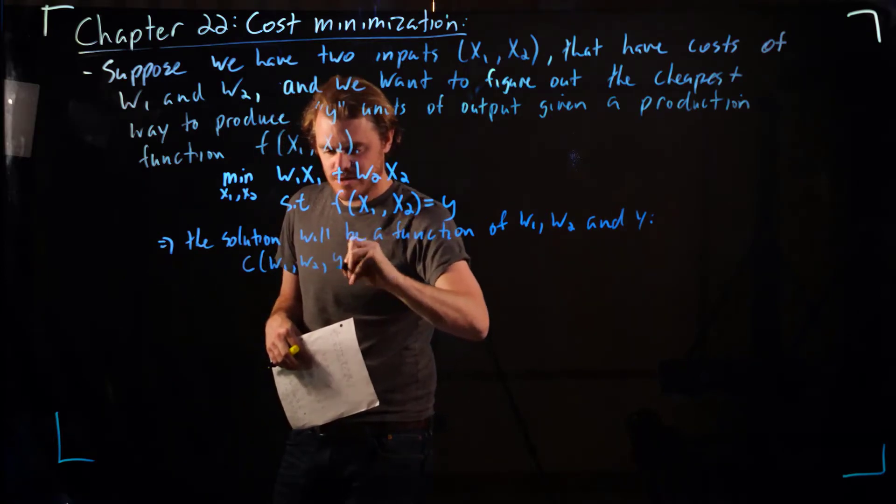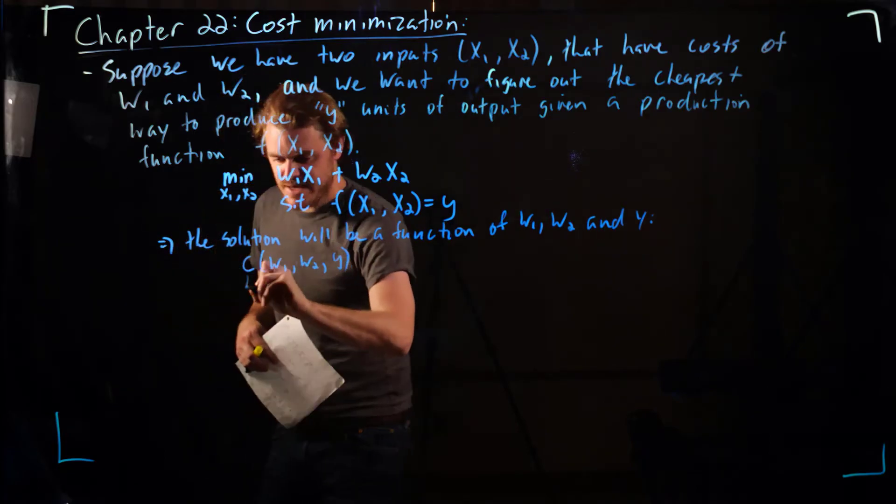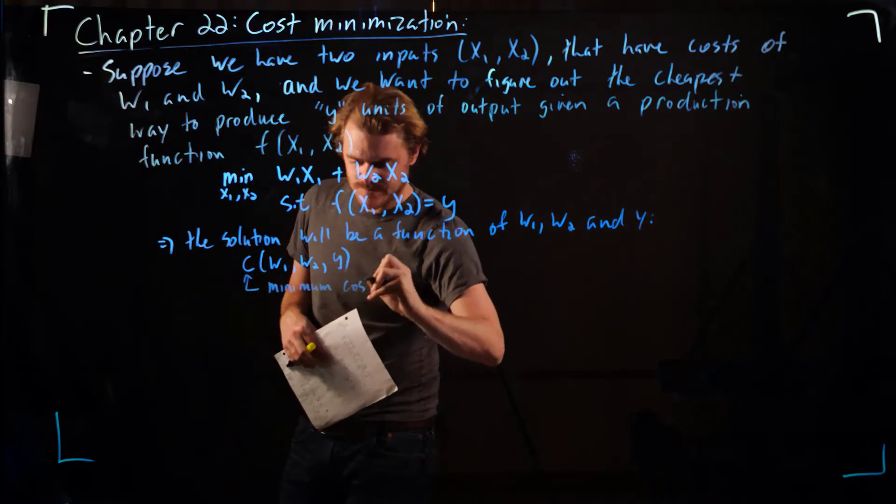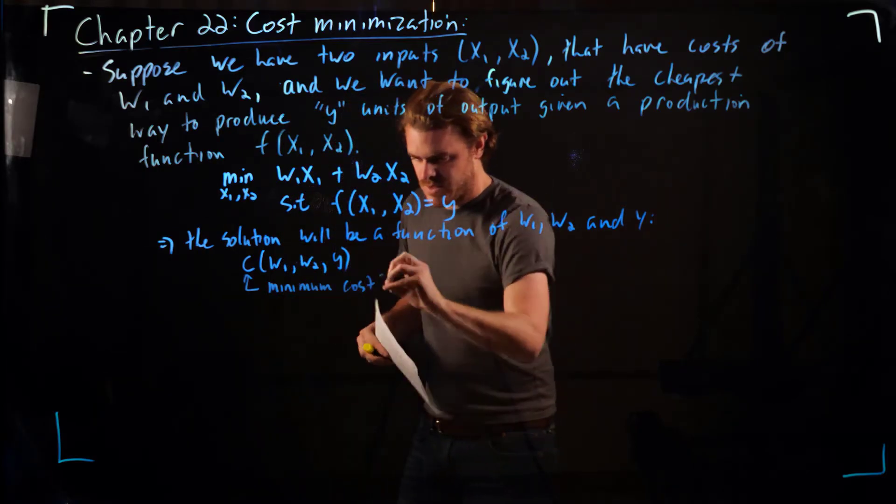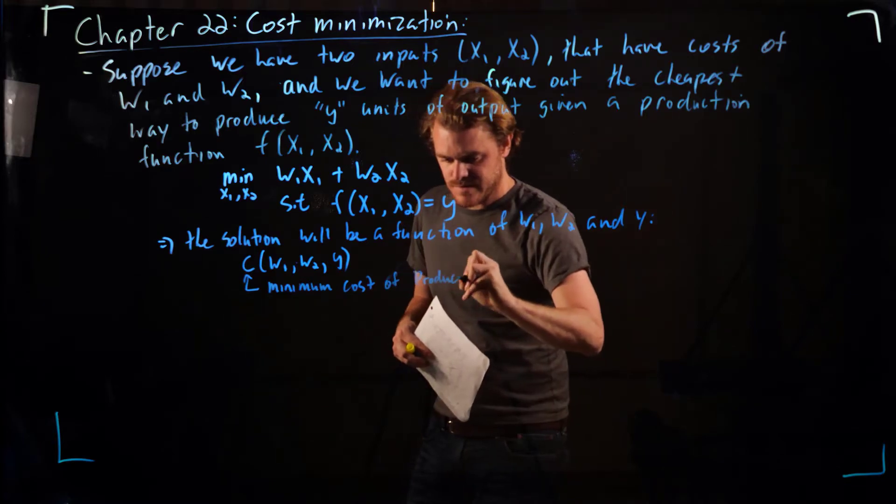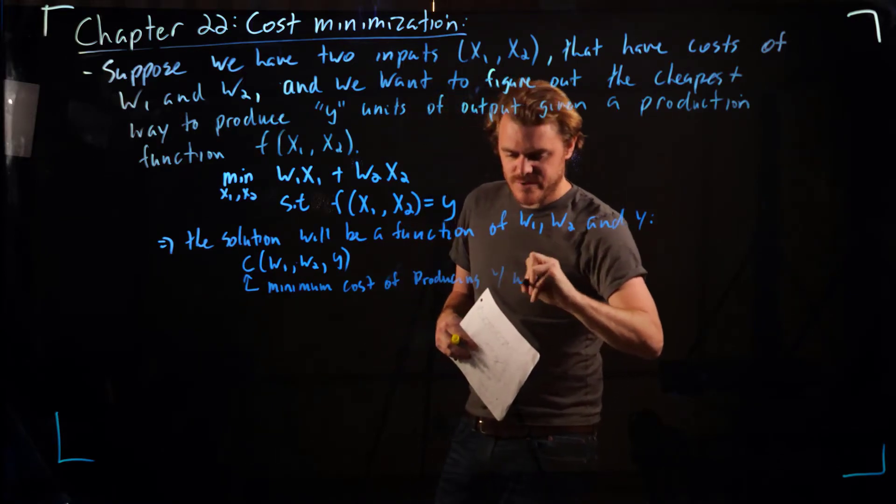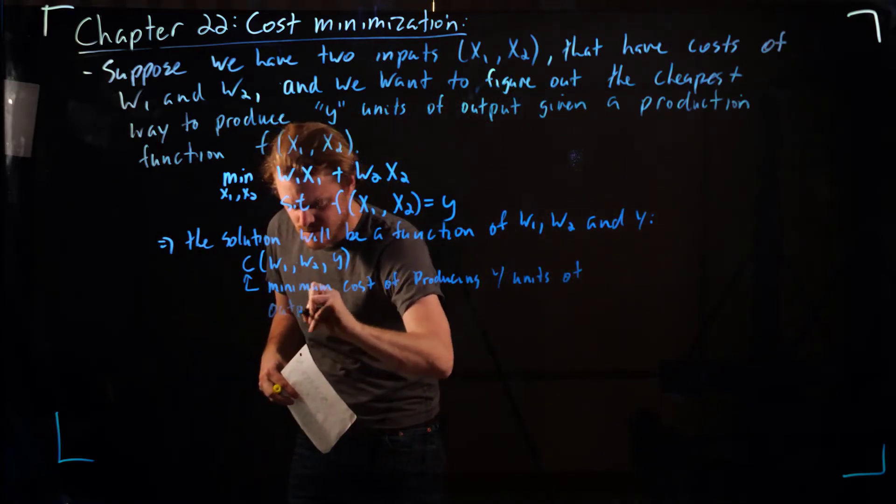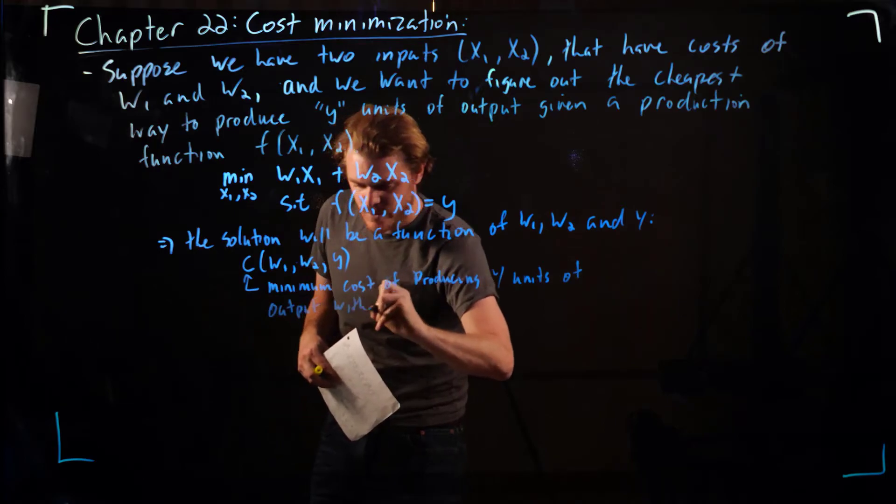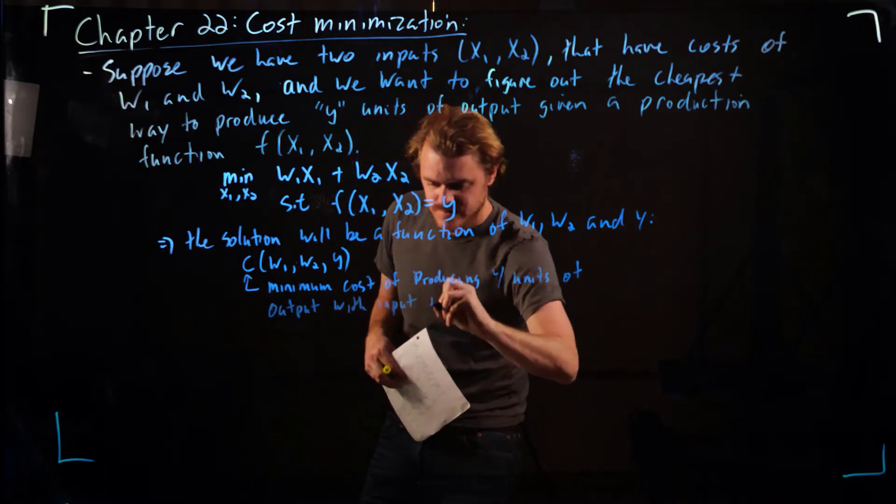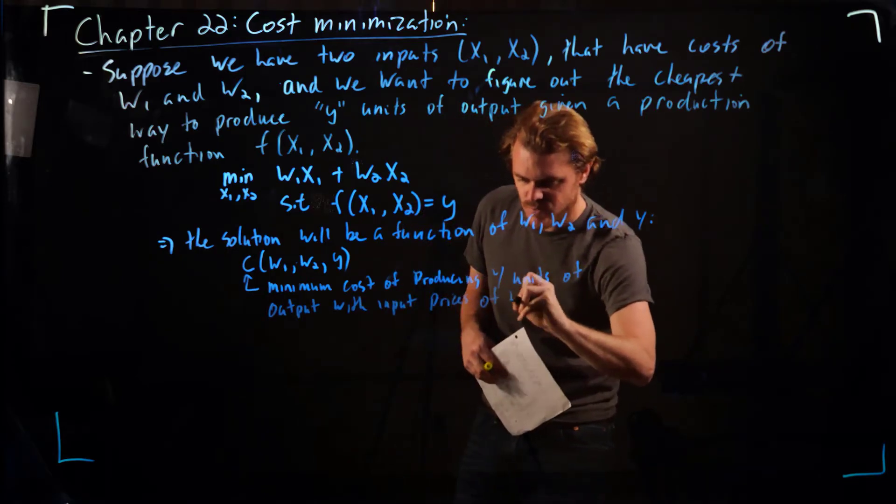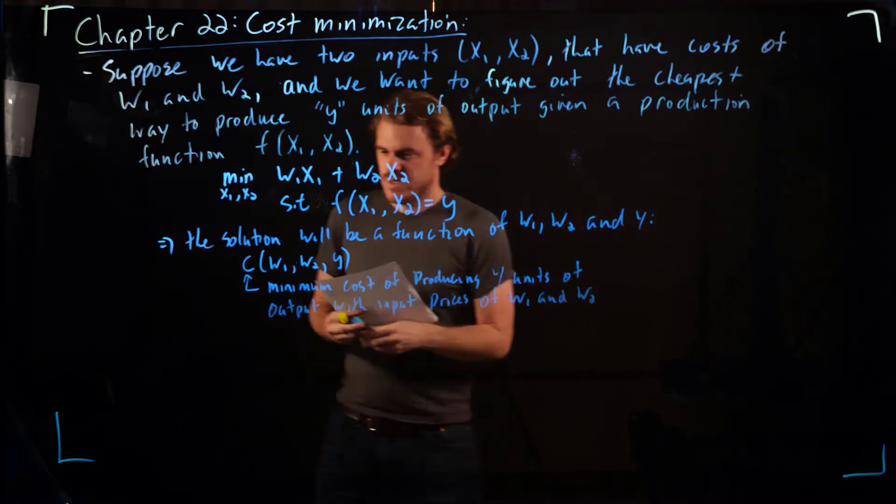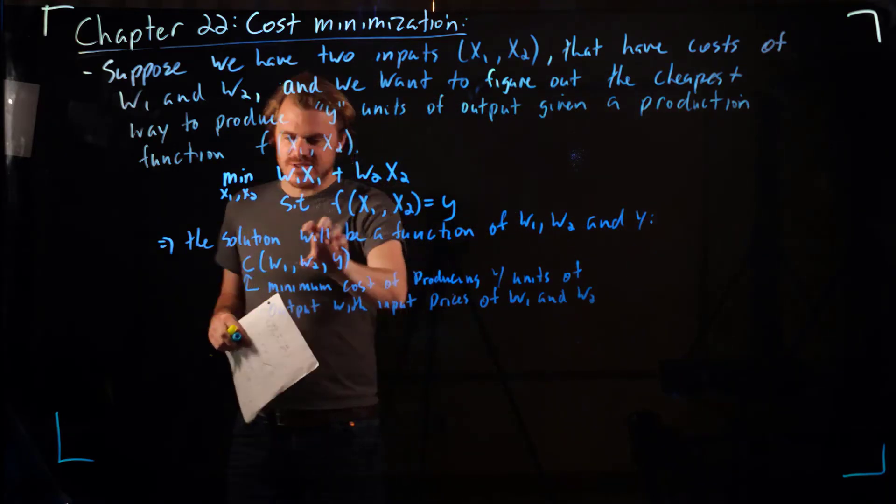w2, and y. So this is the minimum cost of producing y units of output with input prices of w1 and w2. This is the solution to the problem.